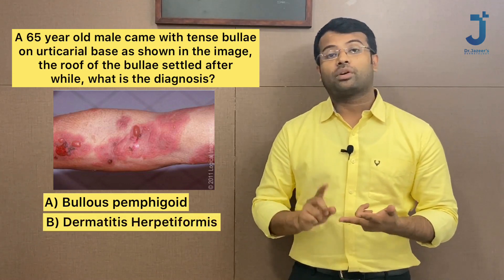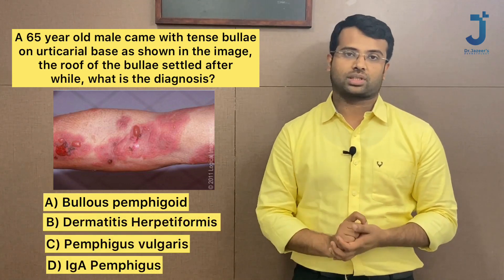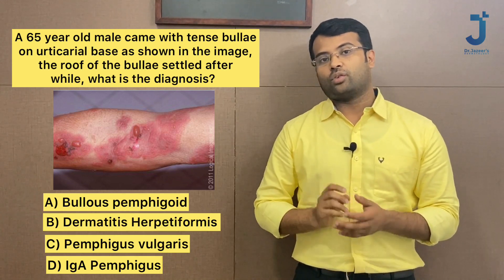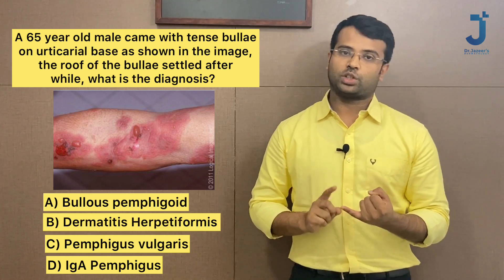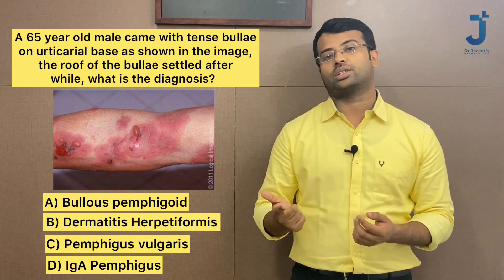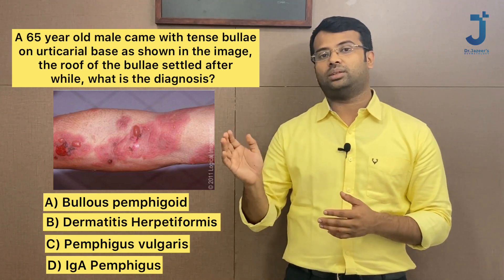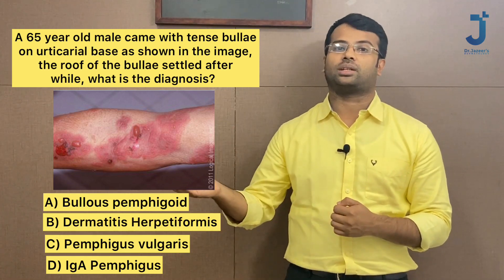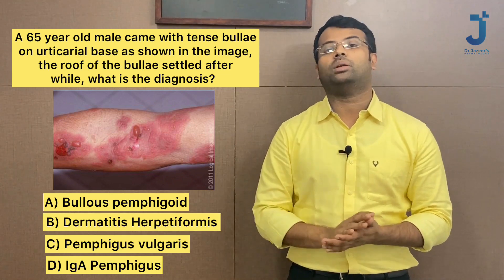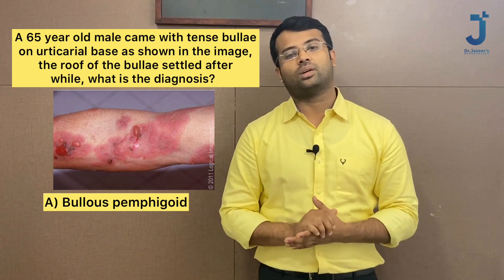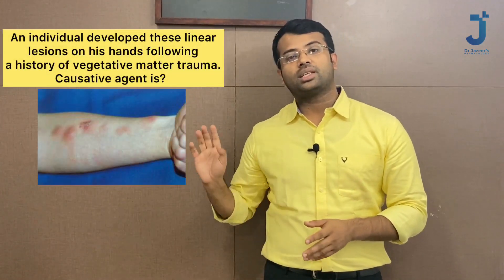The options are bullous pemphigoid, dermatitis herpetiformis, pemphigus vulgaris, and IgA pemphigus. Pemphigus is a superficial vesiculobullous disease producing a flaccid bulla, whereas a tense bulla indicates a sub-epidermal origin — seen in bullous pemphigoid. The right answer is bullous pemphigoid.